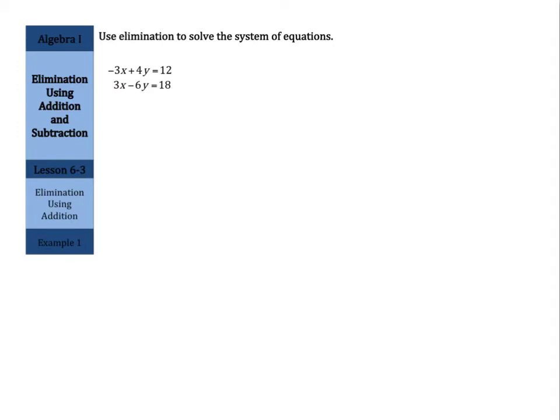So use elimination to solve the system of equations. Negative 3x plus 4y equals 12 and 3x minus 6y equals 18. We already have things lined up with our x's and our y's and our constants here. We have negative 3x and 3x, 4y and negative 6y, and our goal here is to eliminate.